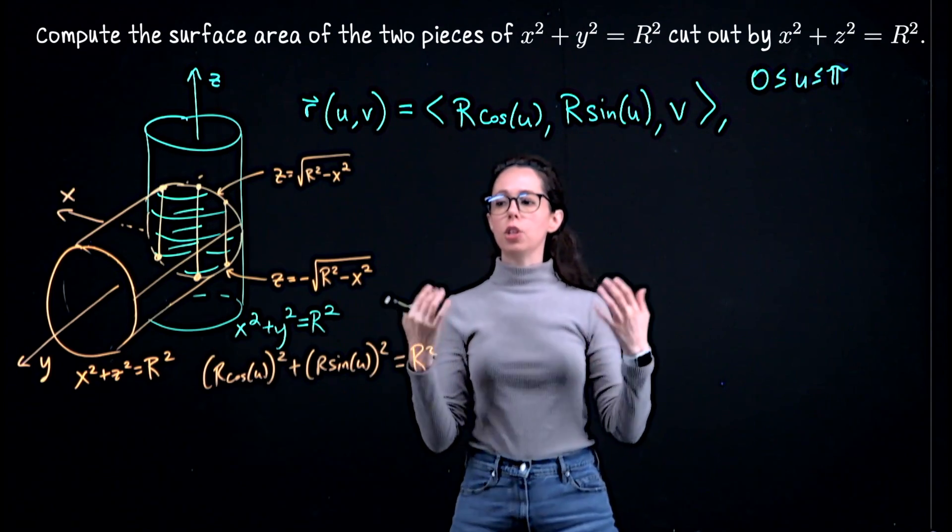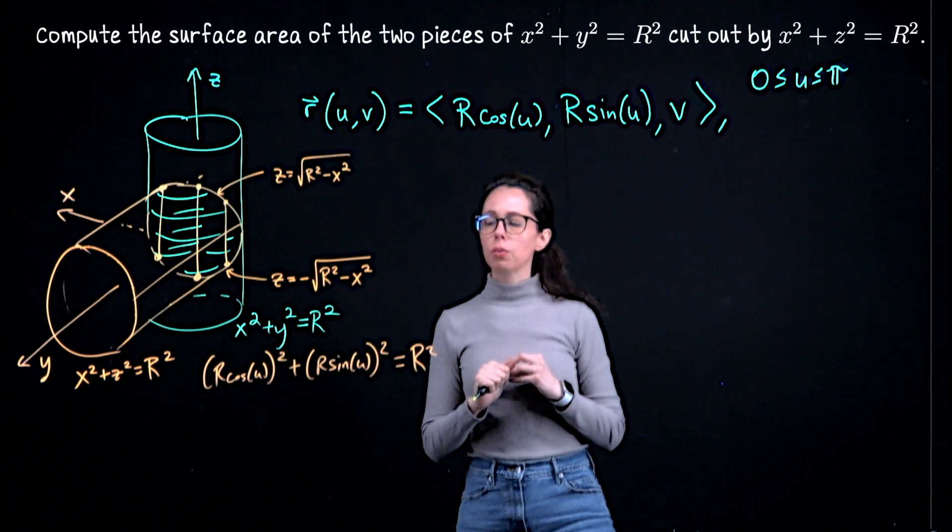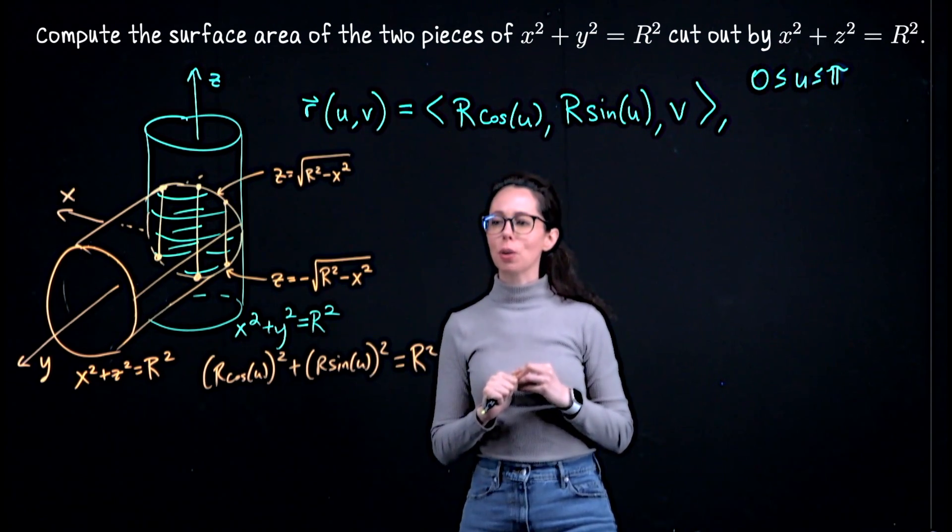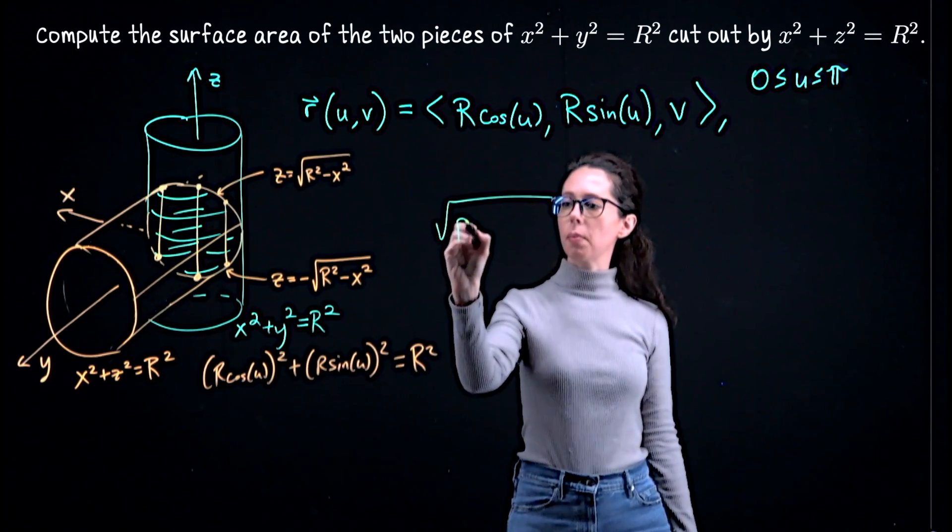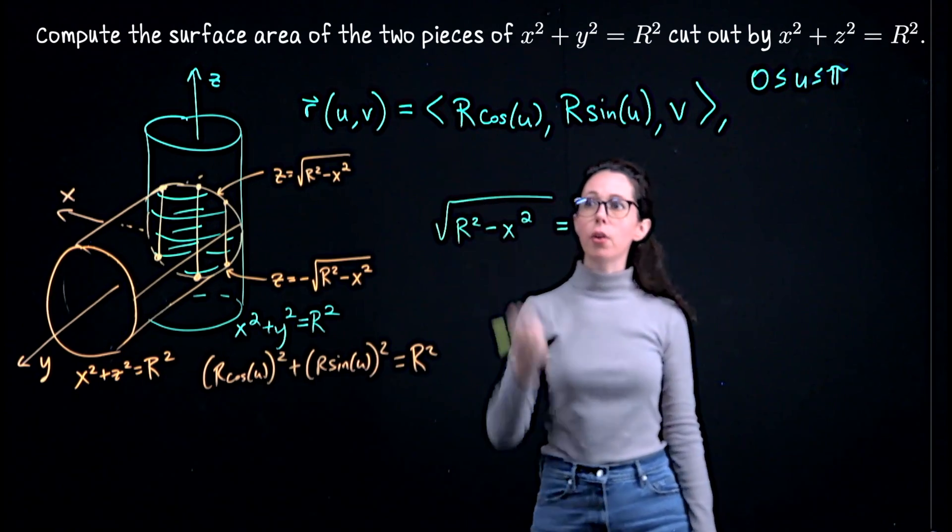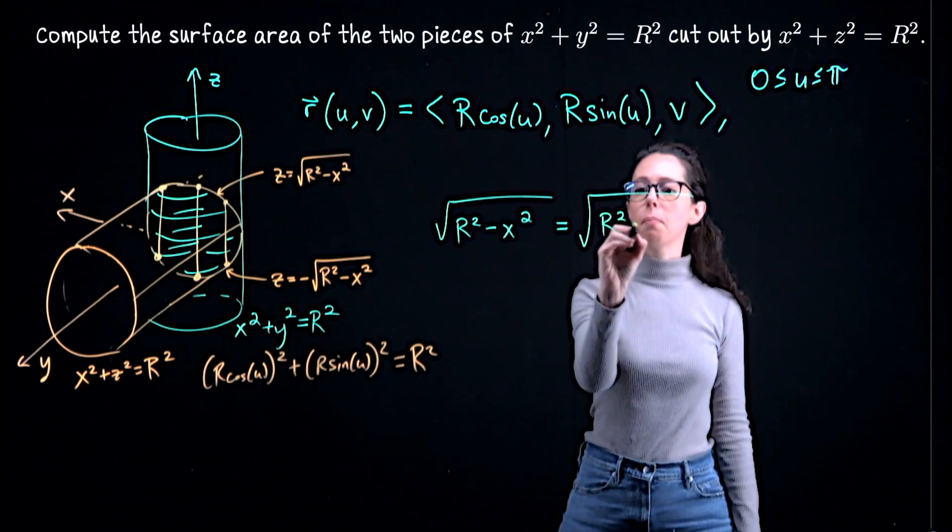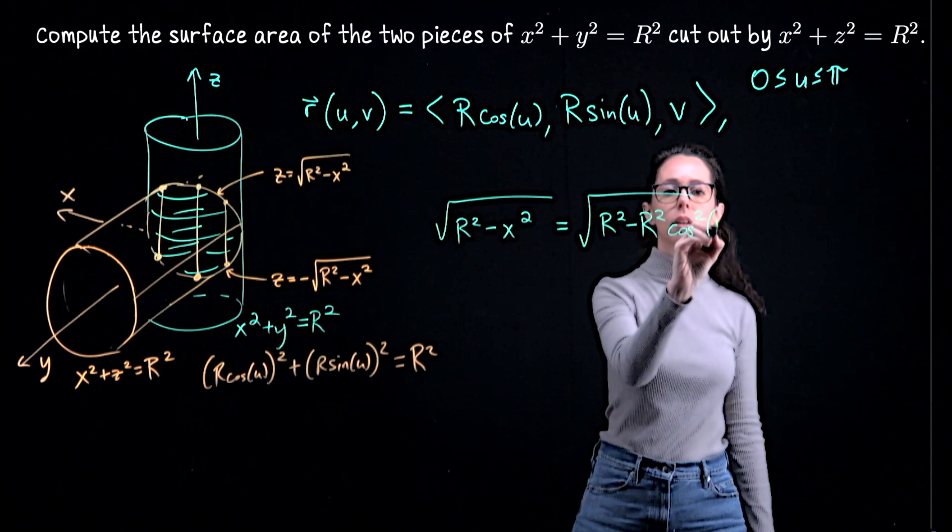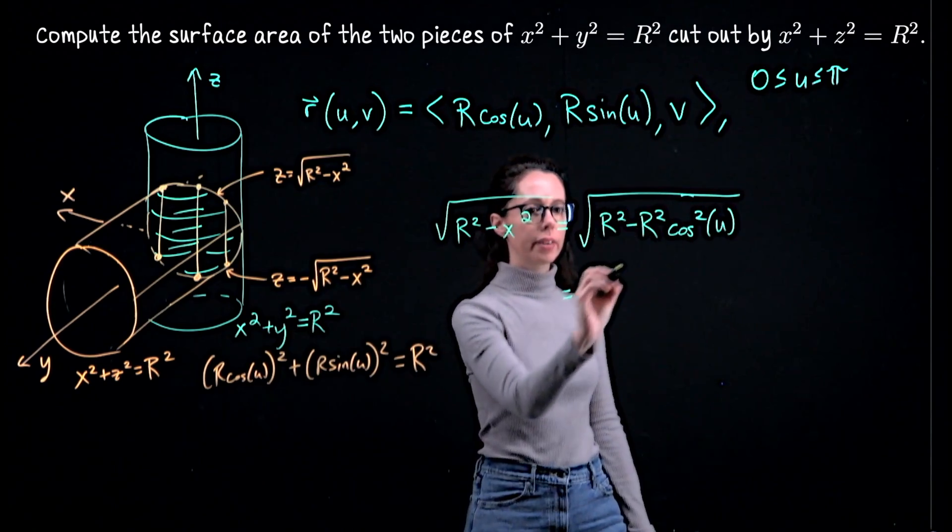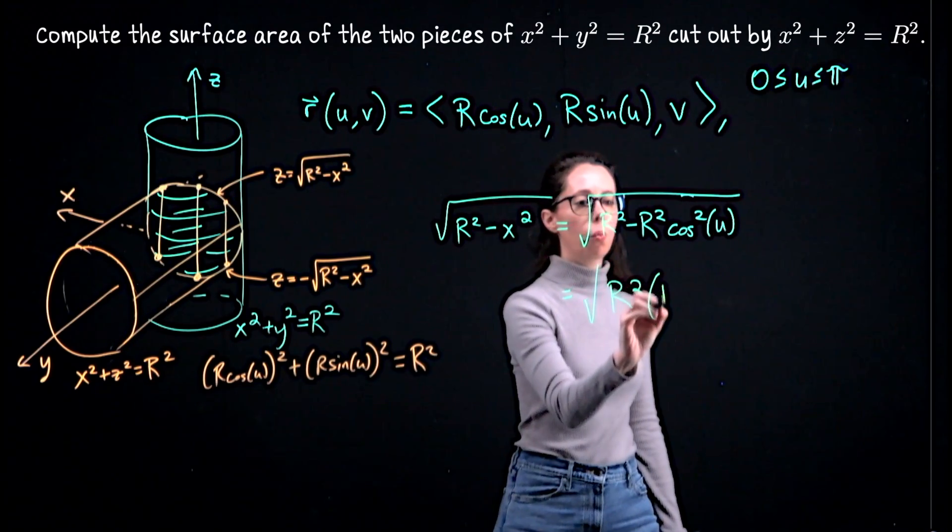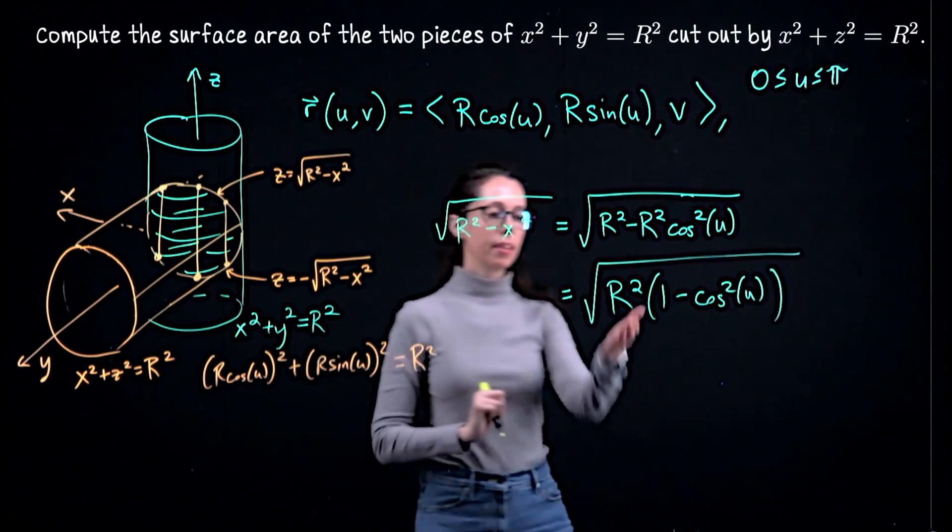z equals the square root of x squared. Those define the bounds for the parameter v. All I need to do is take x and use my description for it. So let me, I'm trying to think if I want to just write the final answer or work it out first. I'll work it out first. Okay, so let me say, what is R squared minus x squared? If I know that x is R cosine u, well, this is going to be the square root of R squared minus R squared cosine squared with angle u. And then notice the R squared they have in common here, so let me factor that out. R squared 1 minus cosine squared.